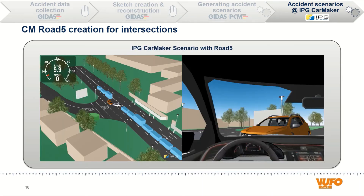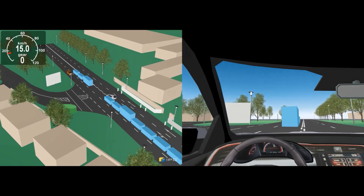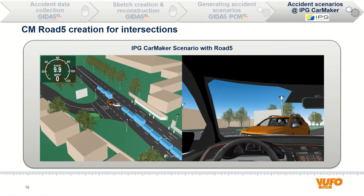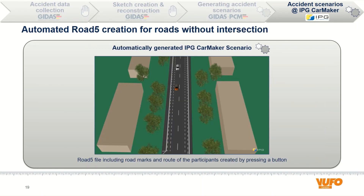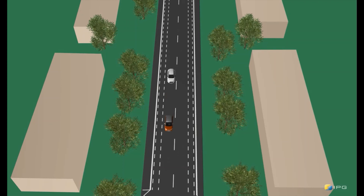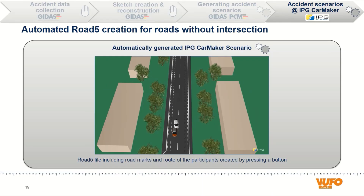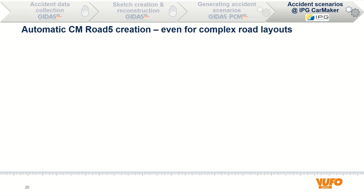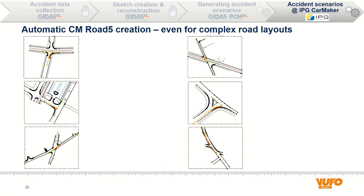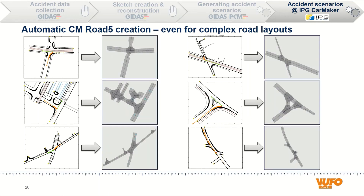The result is a semi-automatically generated IPG CarMaker scenario with road 5. It looks quite similar to the previously shown video, but we have a road 5 definition of the street and the routes here. For road sections without junctions, the automatic road 5 creation is even easier. The road 5 file, including all road marks and the routes of the participants, are created completely automatically by pressing a button only. Our algorithm is able to create the road 5 file automatically even for complex road layouts. Here you can see different road designs taken from accident sketches, some with highly sophisticated layout. The road 5 file is created automatically with road segments, junctions, and standard road marks.